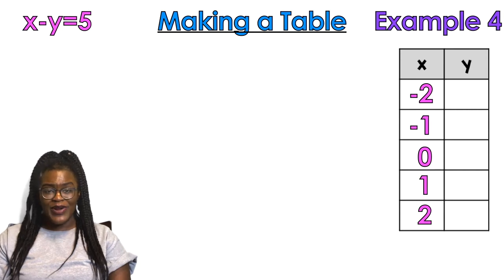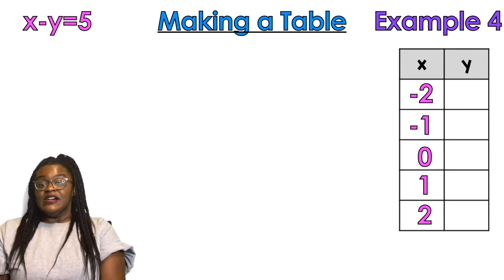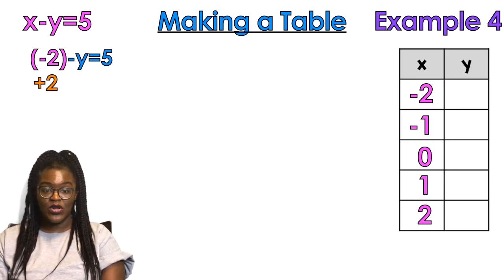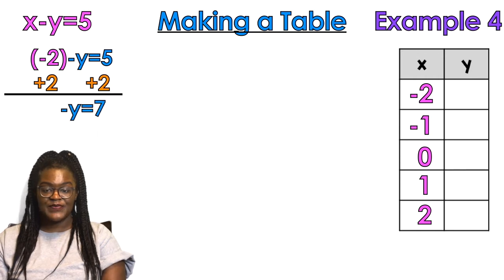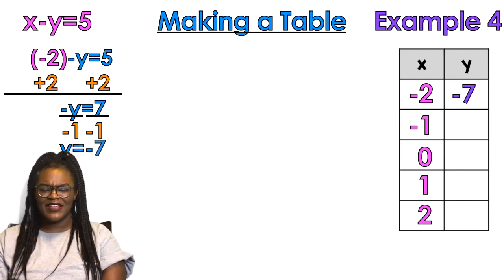Example number four — we're halfway done. Same x values. Plugging in negative 2: negative 2 minus y equals 5. Add 2 to both sides — negative y equals 7 — divide by negative 1, don't forget about that negative in front of the y — y equals negative 7.